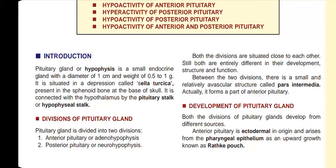It is a small endocrine gland with a diameter of 1 cm and a weight of 0.5 to 1 gram. The location is in the middle of the sella turcica, a depression found at the sphenoid bone at the base of the skull. It is connected with the hypothalamus by the hypophysial stalk or pituitary stalk.